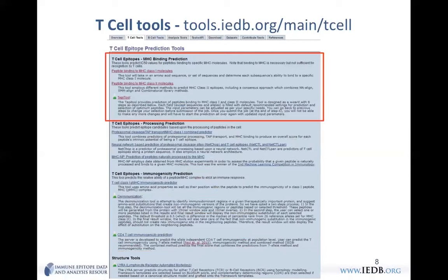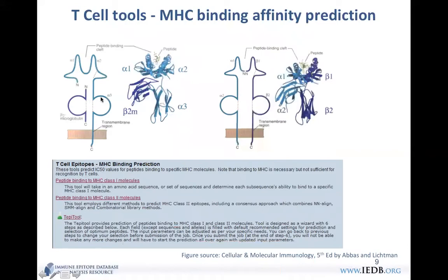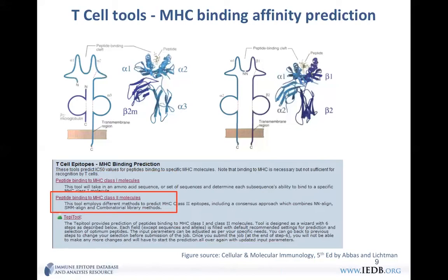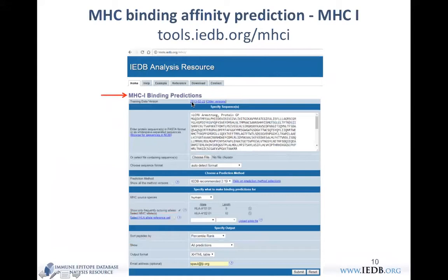Let's take a closer look at the MHC binding prediction tools. This is an MHC class 1 molecule and an example class 2 molecule — you can see the peptide, which is the epitope. These tools predict the strength of binding affinity between the peptide and the molecule. We have three types: a tool for predicting binding affinity of MHC class 1 with peptides, the same for class 2 molecules, and a new tool called Tepitool with a more user-friendly wizard interface with six steps.